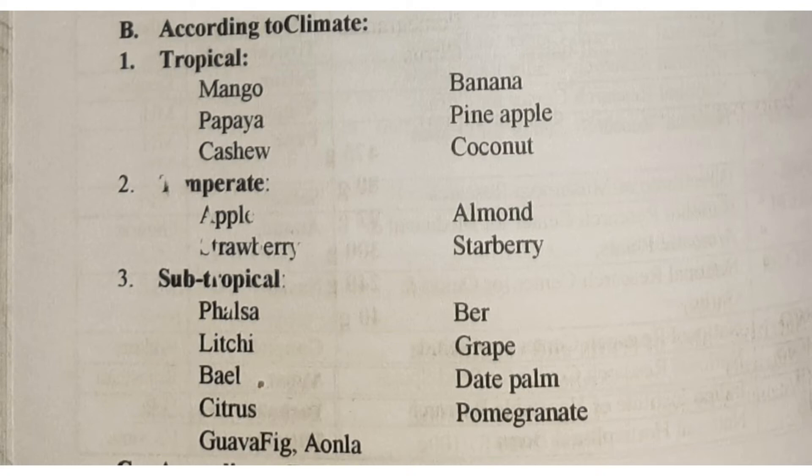Temperate fruits include apple, strawberry, and almond. Subtropical fruits include falsa, lychee, bael, citrus, guava, fig, amla, ber, grape, date palm, and pomegranate. So these were according to climate.